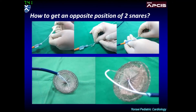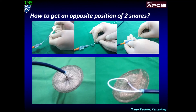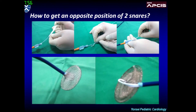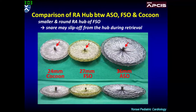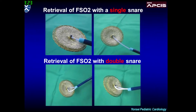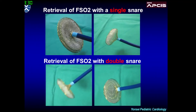To get the opposite position of the two snares: pass the distal end of the first snare catheter through the second snare, like threading a needle. Go forward with the second snare to the device and then pull the first snare slowly while pushing the second snare. Then you can achieve the opposite position between the two snare catheters. The Oclotec device has a similar but smaller, ball-shaped RA hub, which may cause slipping out of the snare during retrieval. The double-snare technique helps to securely hold the small hub, thereby preventing slipping.